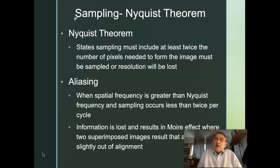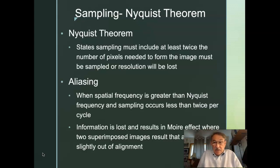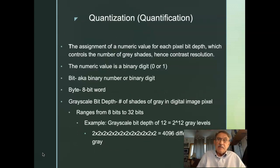Moiré effects often occur when we have used a grid in relationship to our image, and this is especially true in the CR system. If the grid lines run parallel to the way that the image plate has been scanned, we get an image that is slightly out of alignment — a Moiré effect. They don't enhance your radiograph and typically, when you have a Moiré effect, you're going to have to repeat that image.